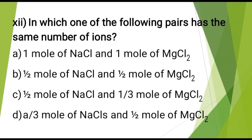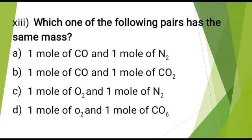In which one of the following pairs has the same number of ions? The correct answer is: 1 mol of NaCl and 1 mol of MgCl₂. Which one of the following pairs has the same mass? The correct answer is: 1 mol of Cu and 1 mol of N₂.